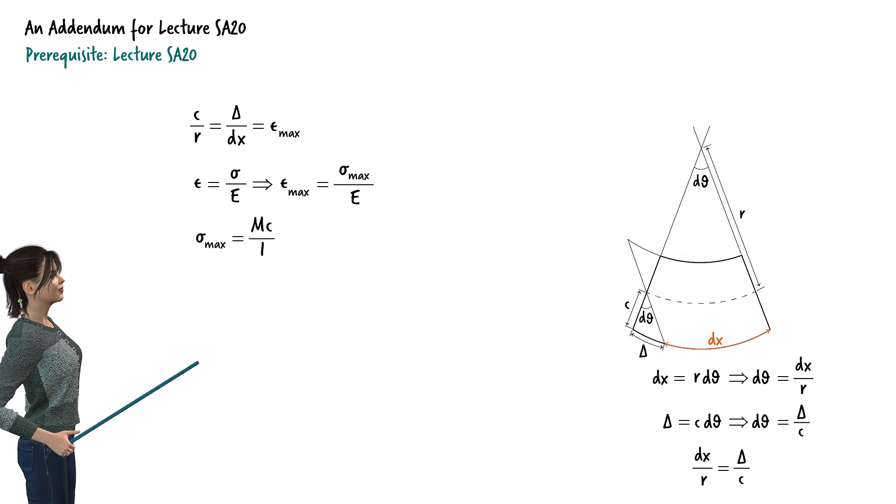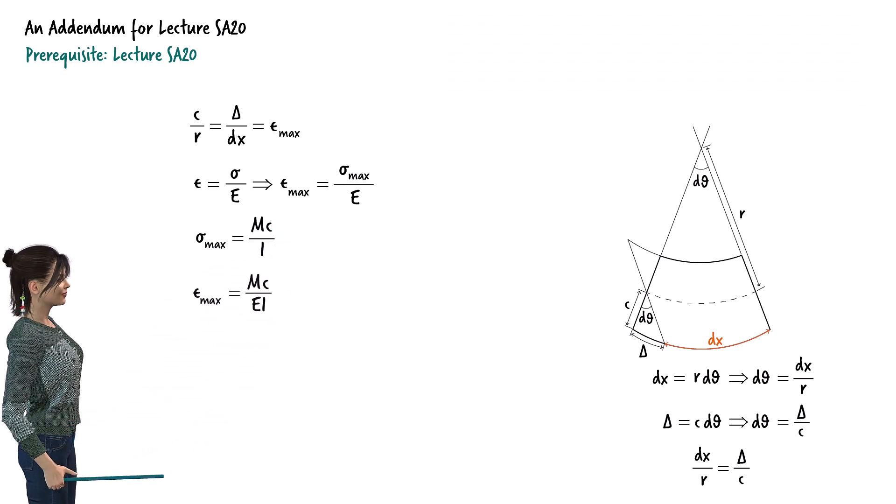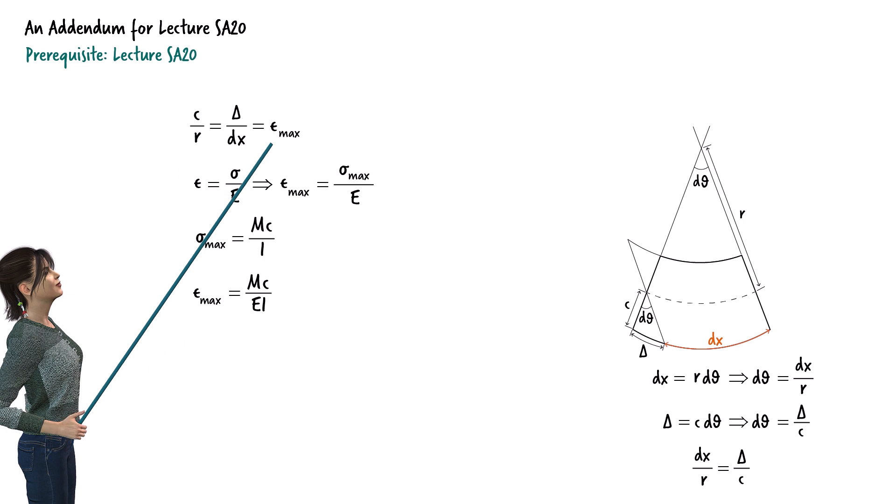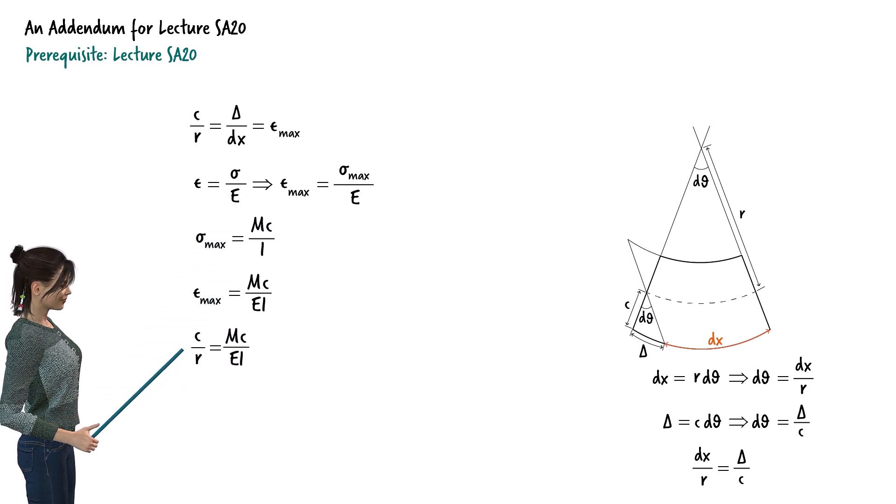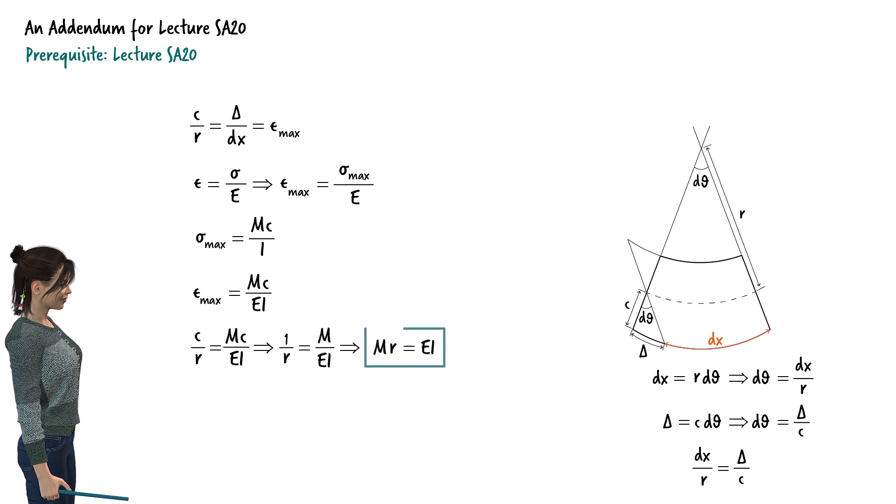Now, knowing that sigma max equals M times C over I, we can rewrite this equation. So, C over R, which is equal to epsilon max, can be written as. This equation simplifies to. Or.